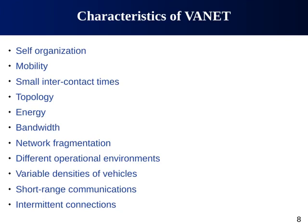Other characteristics include the diverse environments in which vehicles operate — urban areas, rural areas, highways, etc. Variable vehicle density is also a characteristic: you cannot predict the actual number of vehicles in advance. Sometimes roads are congested, sometimes they are sparse. Short-range communication and intermittent connections, as discussed, are also key features. Some of these characteristics make VANET challenging, some make it interesting, and some make it resemble the characteristics of Mobile Ad Hoc Networks.